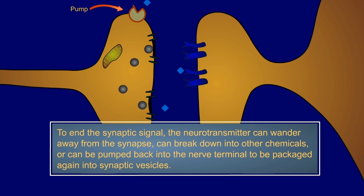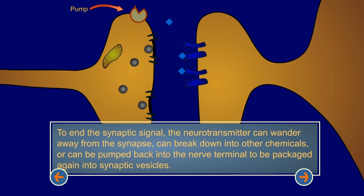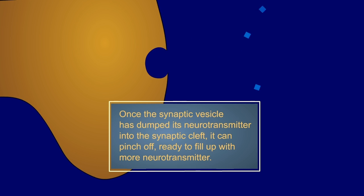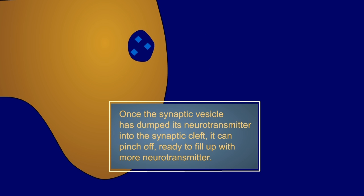To end the synaptic signal, the neurotransmitter can wander away from the synapse, can break down into other chemicals, or can be pumped back into the nerve terminal to be packaged again into synaptic vesicles. Once the synaptic vesicle has dumped its neurotransmitter into the synaptic cleft, it can pinch off, ready to fill up with more neurotransmitter.